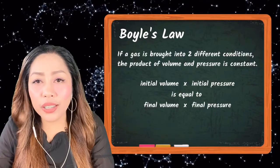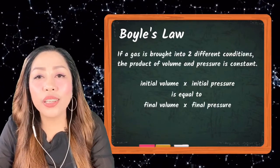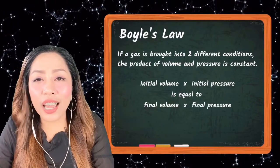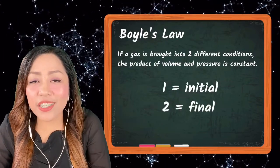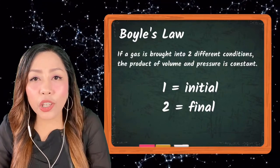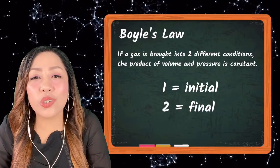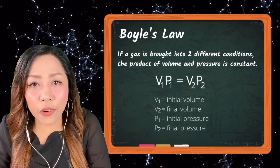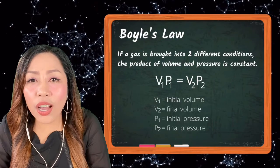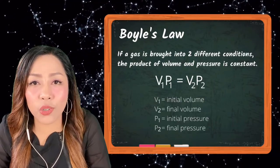Therefore, initial volume times initial pressure is equal to final volume times final pressure. To put these things into a mathematical expression, we will use 1 to indicate initial and 2 to indicate final. Therefore, we can write V₁ times P₁ is equal to V₂ times P₂.